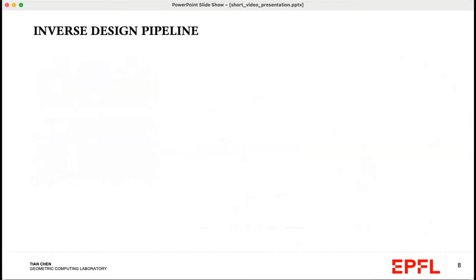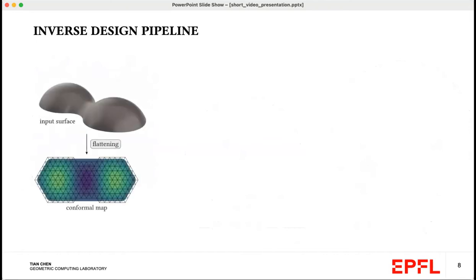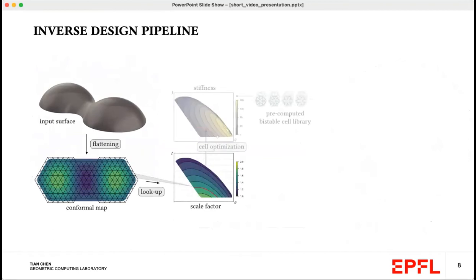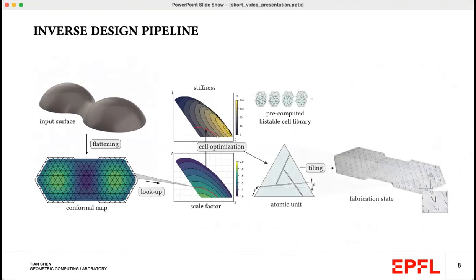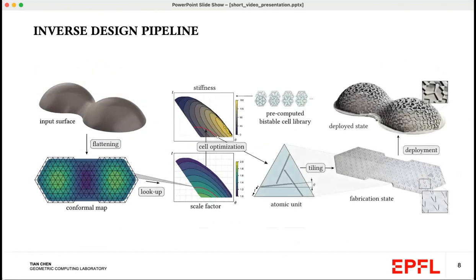Here we have the complete inverse design pipeline. Given a target surface, we compute its conformal map. First, we check that the expansion ratios are within the admissible bounds. If they are, we can overlay a regular grid of triangles and for each triangle, seek a specific scale factor along this contour map. From that, we can select the unit cell that has the highest stiffness from our pre-computed library. Once we have all the unit cells, we can tile this into a 2D shape to be laser cut and deployed.